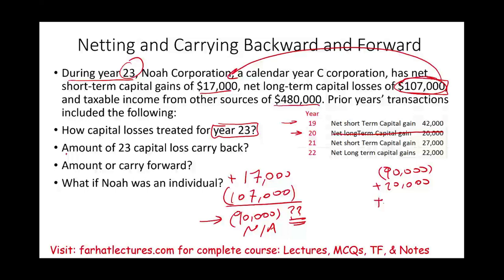In the year 2021, we have $27,000 of capital gains. We'll amend the return and get a refund — wipe this out. In 2022, we have $22,000 of capital gains, and we can wipe this out too. So of the $90,000 carryback: $90,000 minus $20,000, minus $27,000, minus $22,000 — I'm going to have leftover $21,000 of capital losses.